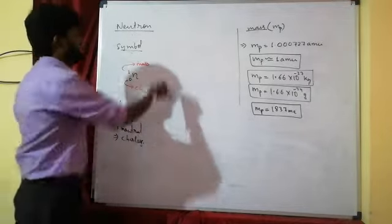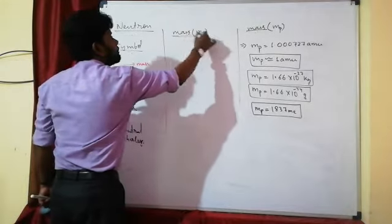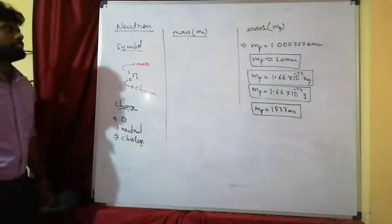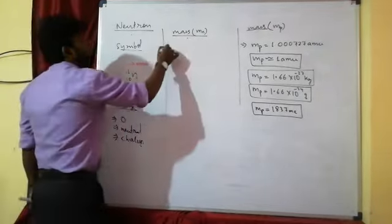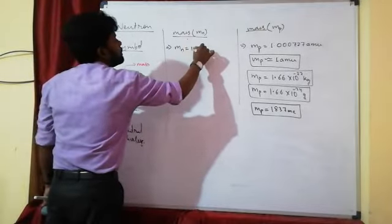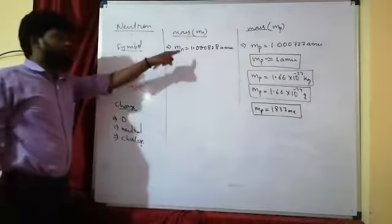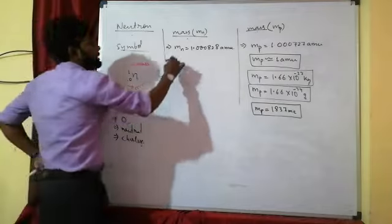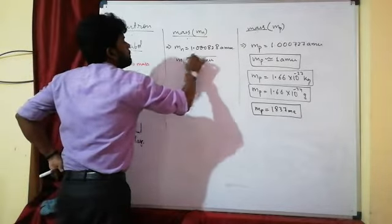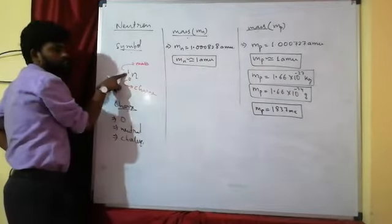Now, the mass of the neutron. The mass of the neutron is 1.000828 amu, which can be approximated as 1 amu.